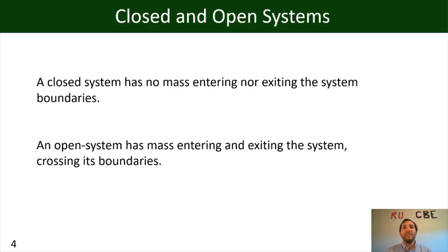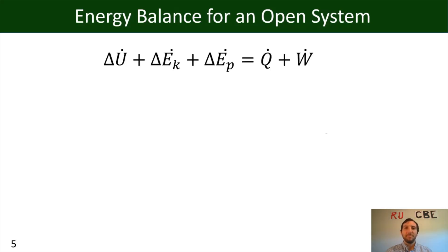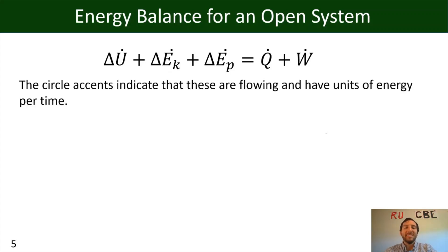Having mass entering and exiting our system changes our energy balance a little bit. For an open system energy balance, the equation looks the same but all variables have dot accents on top, indicating flow. All units are now in energy per time rather than just energy, because all our energy quantities are in motion.